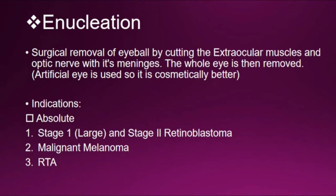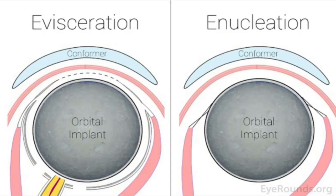Destructive operations of the eyeball include enucleation, evisceration, and exenteration. Enucleation is the surgical removal of the eyeball by cutting the extraocular muscles and optic nerve with its meninges. The whole eye is then removed and an artificial eye is used, making it cosmetically better. You can see the picture of enucleation — the extraocular muscle and optic nerve with its meninges is cut.